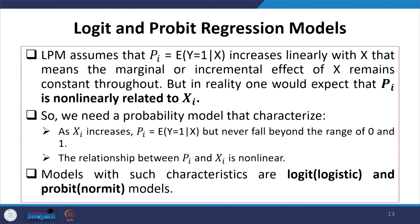Coming to two other important and widely applied regression models: logit and probit. LPM assumes p_i equals the expected value of y given x increases linearly with x, meaning the marginal effect of x remains constant. But in reality, one would expect p_i to be non-linearly related to the regressors. We need a probability model where p_i never falls beyond the range of 0 and 1, and the relationship between p_i and x_i is non-linear.